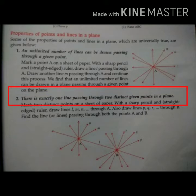There is exactly one line passing through two distinct given points in a plane. It means when two points are given in a plane, then only one line can pass through them.